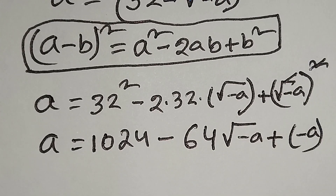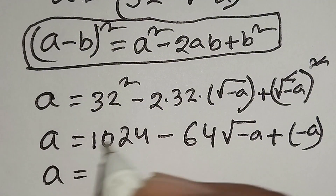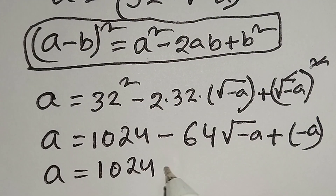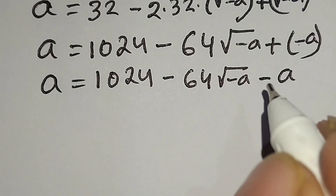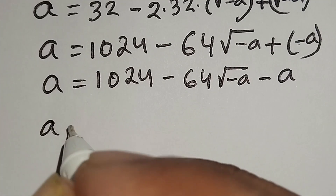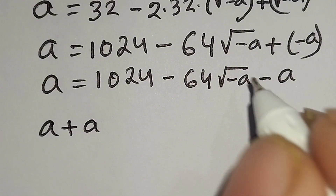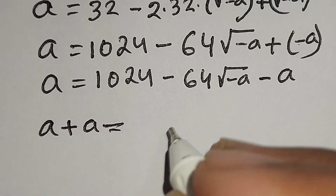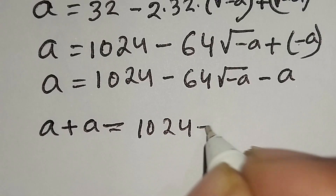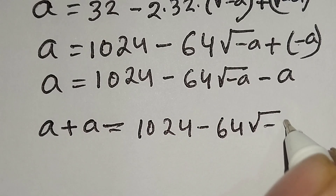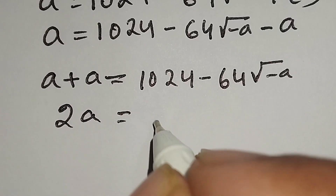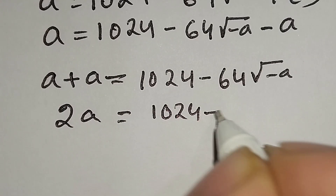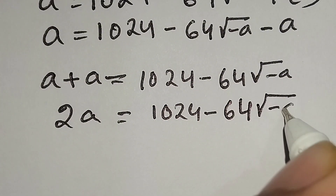Continuing the expansion: a equals 1024 minus 64 times square root of negative a, and the square root of negative a squared gives negative a. Now we move negative a to the left side, so positive a plus a on the left gives 2a. The right side becomes 1024 minus 64 times square root of negative a.